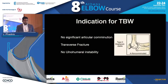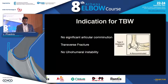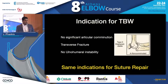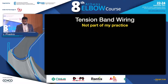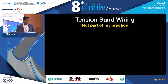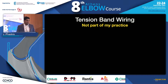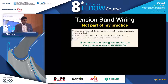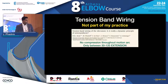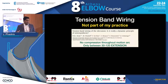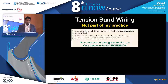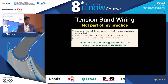The indications for tension band wiring are: no articular comminution, a fairly transverse fracture, and no ulnohumeral instability. These are the same indications as for a suture repair technique. There's some question as to whether tension band wiring actually provides compression — the principle is established, but there's debate as to whether it provides compression through the full arc of motion.